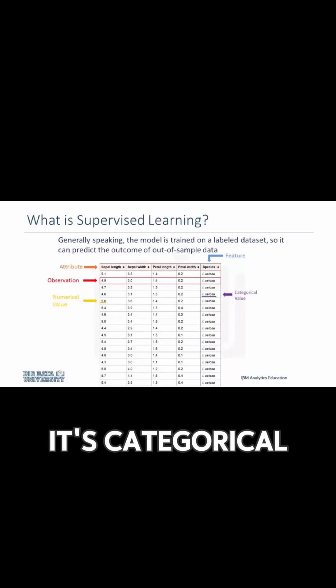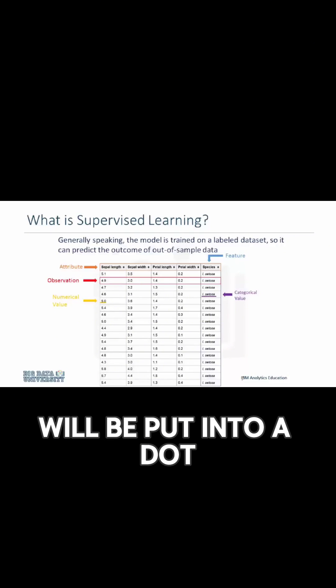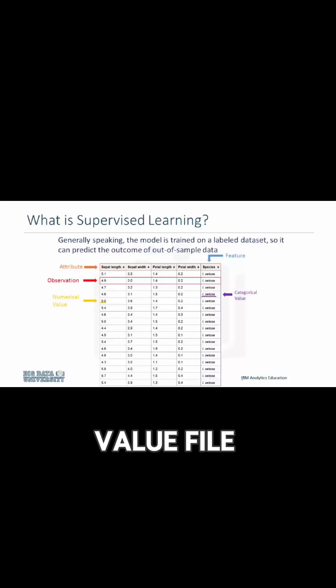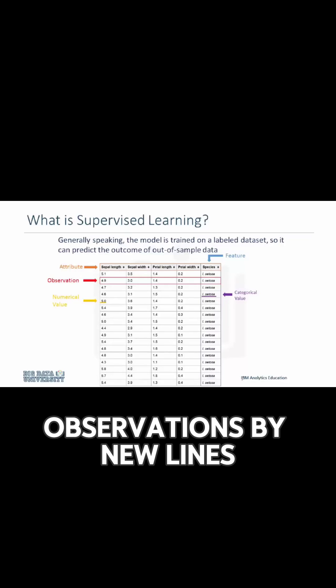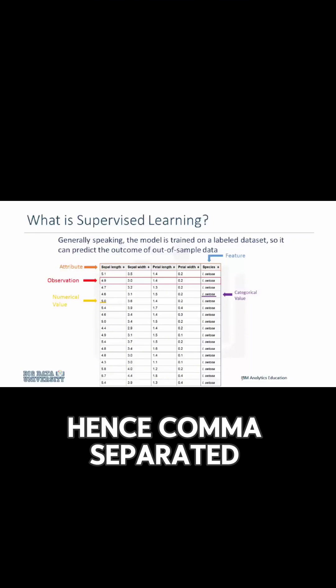In this case, it's categorical because this data set is made for classification. Usually, a data set like this will be put into a .csv file or comma-separated value file. This file separates observations by new lines and attributes by commas, hence comma-separated.